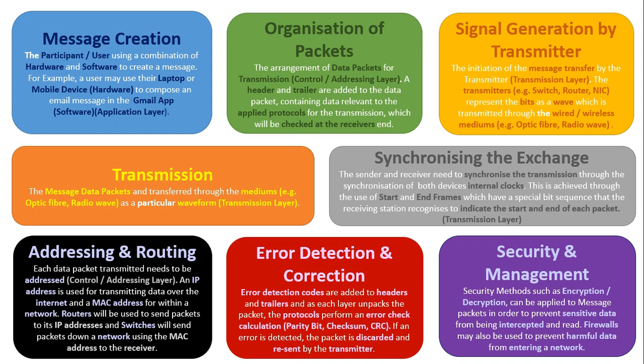This video has covered the different stages of data transmission within the communication systems unit. It all starts with message creation, turning the data into packets, converting those packets into a waveform and beginning the actual transmission, synchronizing the exchange with the receiver, sending the data to a specific address, applying error detection to ensure the data at its destination is correct, and applying security methods to keep that data safe.